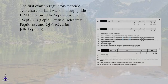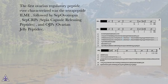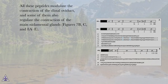The first ovarian regulatory peptide ever characterized was the tetrapeptide ILM, followed by sepovotropin, sep-CRPs (sepia capsule-releasing peptides), and OJPs (ovarian jelly peptides). All these peptides modulate the contraction of the distal oviduct, and some of them also regulate the contraction of the main midimental glands (figures 7b, c, and 8ae).